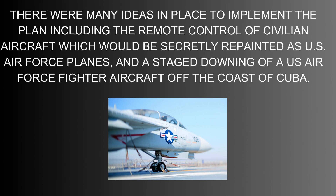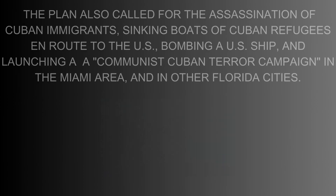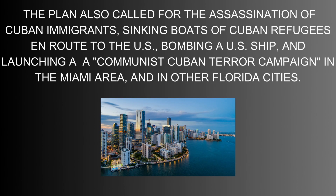There were many ideas in place to implement the plan, including the remote control of civilian aircraft which would be secretly repainted as U.S. Air Force planes, and a staged downing operation of U.S. Air Force fighter aircraft off the coast of Cuba. The plan also called for the assassination of Cuban immigrants, sinking boats of Cuban refugees en route to the U.S., bombing a U.S. ship, and launching a Communist-Cuban terror campaign in the Miami area and in other Florida cities.